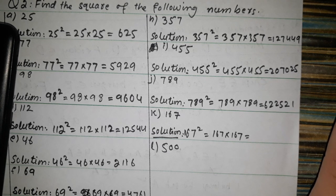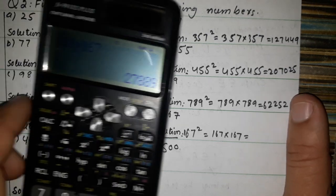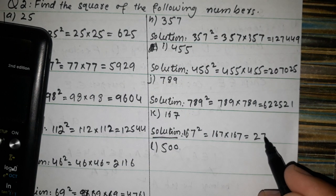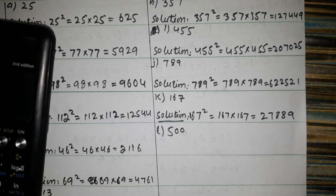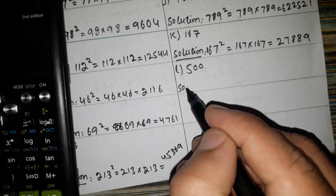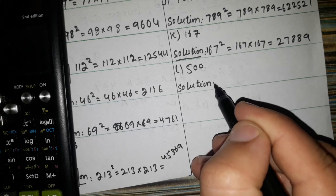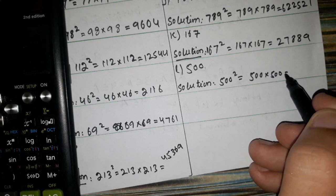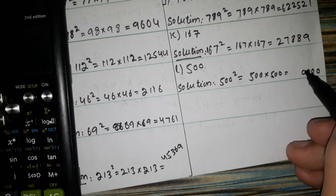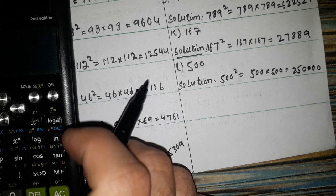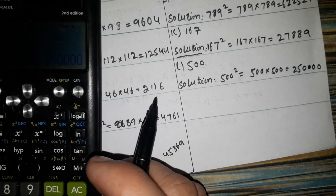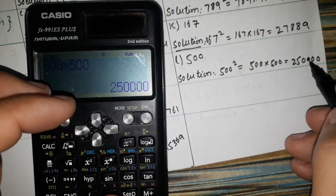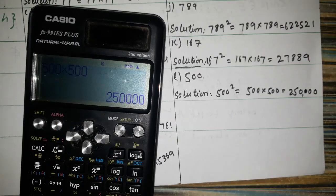Now 167 square. 167 multiplied by 167 — the answer is 27889. Also, 500 square: 500 multiplied by 500. The answer is 250000. So 500 squared equals 250000.